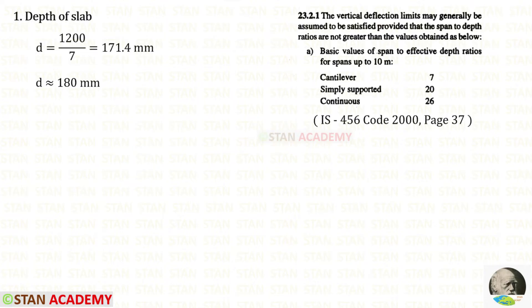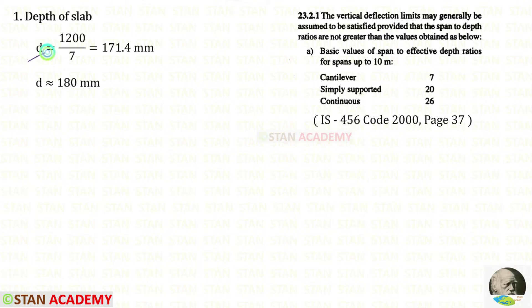The first step is to find the effective depth of the slab. In IS 456 code book, page number 37, the ratios of span to effective depth are given. The span given in the question is 1200, and it is a cantilever slab. For cantilever, the ratio is 7. For the effective depth, we will get this value. We can round this to 180 millimeter.